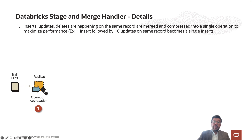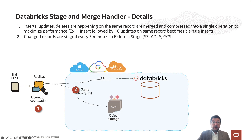For example, if there is one insert followed by five updates, it will become a single insert into the target. At the end of the aggregation, generated Avro files will be loaded into target storage services, which are used as a temporary staging location. By default, the stage window is set to three minutes.